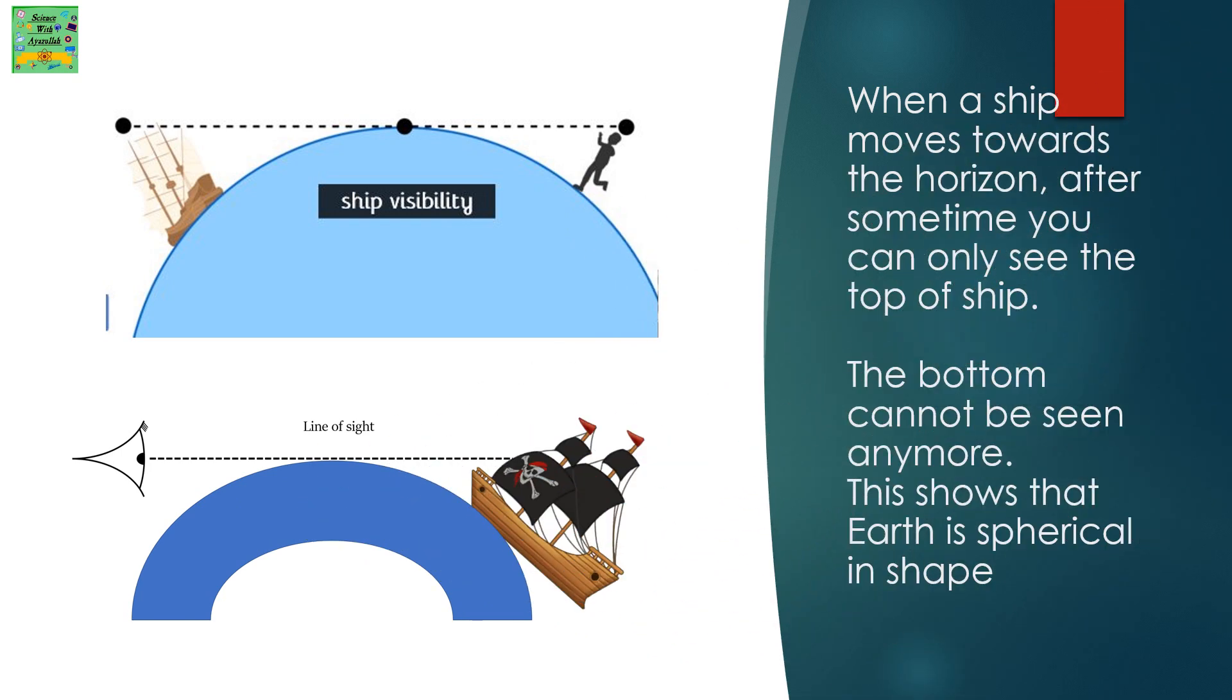When a ship moves towards the horizon, after some time you can only see the top of the ship. The bottom cannot be seen anymore. This shows that Earth is spherical in shape.